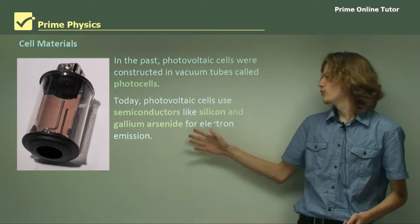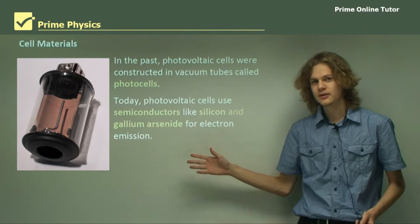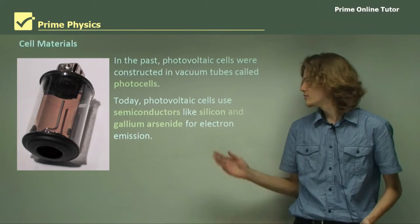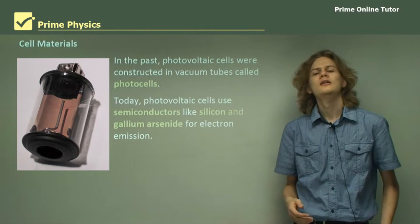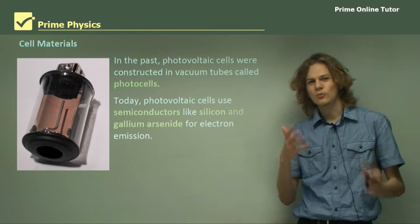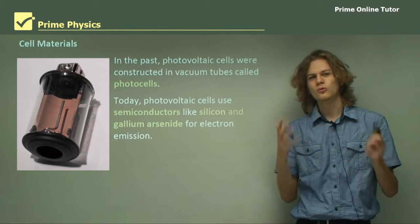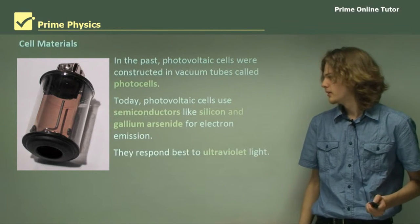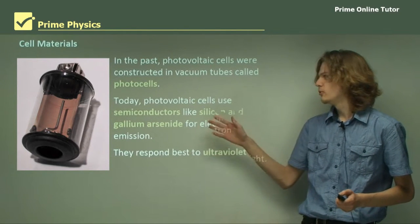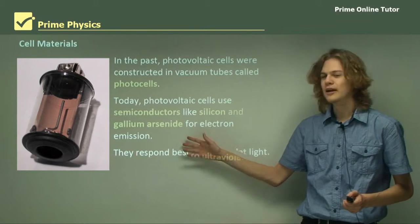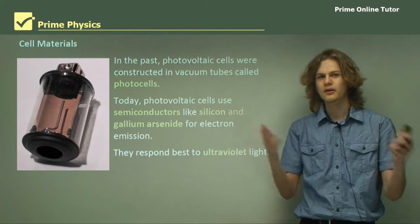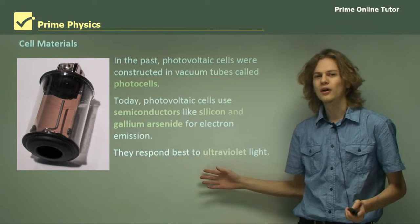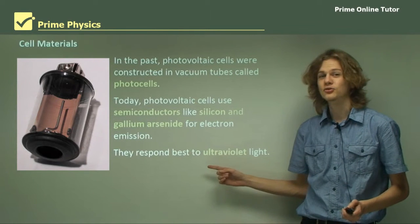Today, photovoltaic cells use semiconductors. Some common semiconductors are silicon and gallium arsenide. These operate in a slightly different way, but it's still the same basic principle. Both the photovoltaic cells we use today and the photocells used a few decades ago respond best to ultraviolet light, because this light has the most energy.